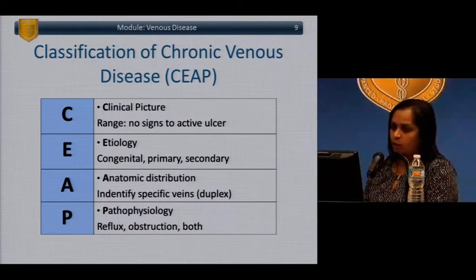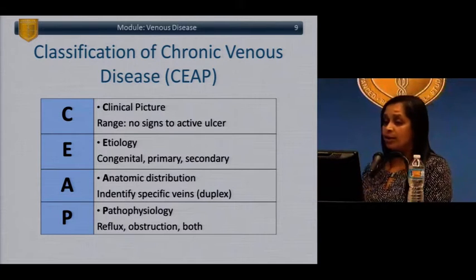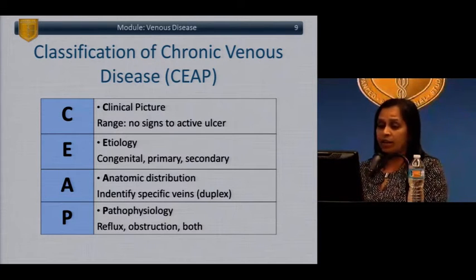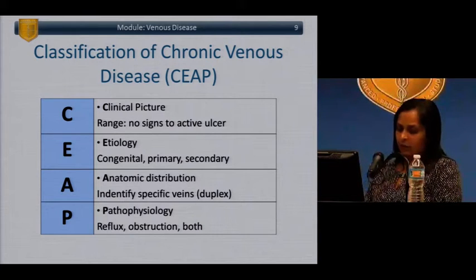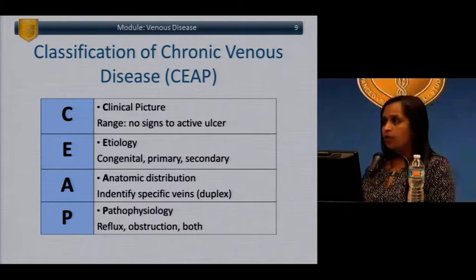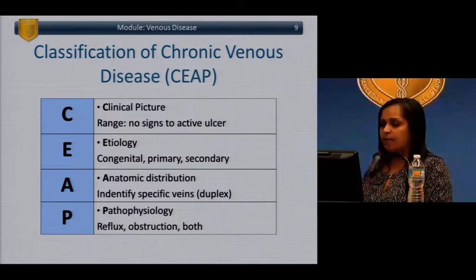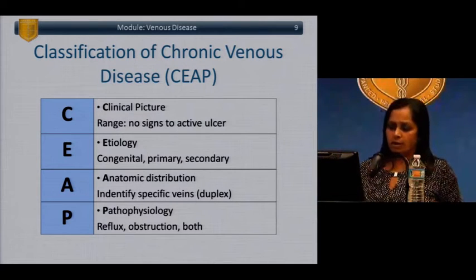We'll review the clinical picture in more detail. The etiology can range from congenital to primary to secondary. The specific veins affected are defined with the anatomic classification. The pathophysiology can be reflux or venous insufficiency, obstruction, or both.